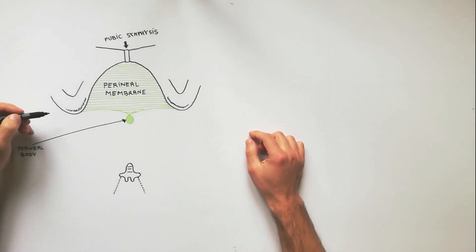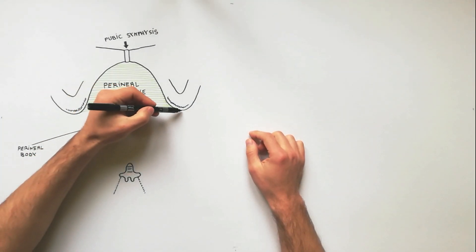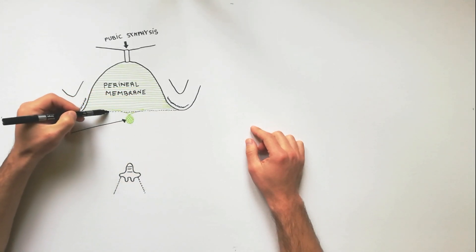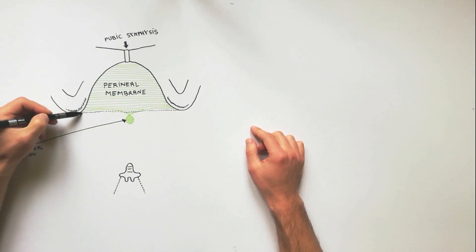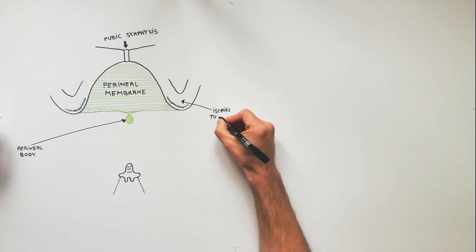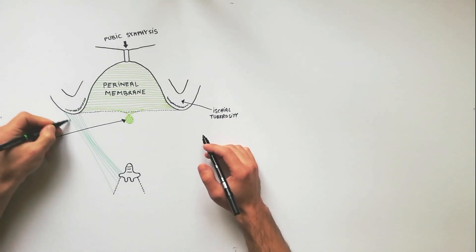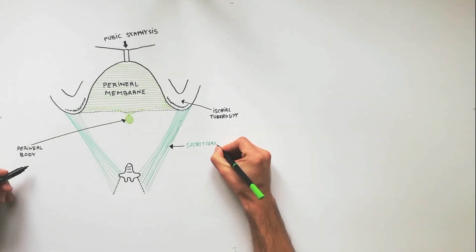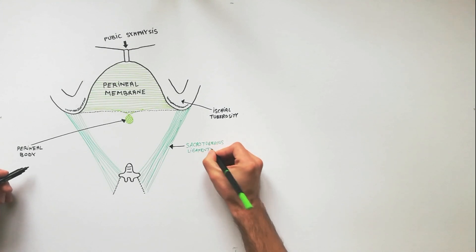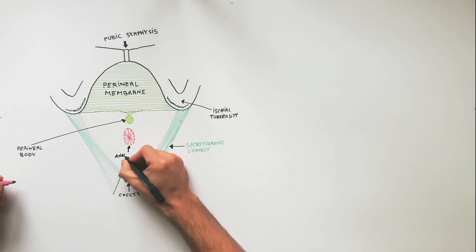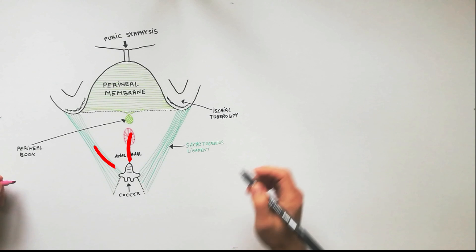The posterior perineum, also called the anal triangle, is a triangular area bounded in front by a horizontal line joining the ischial tuberosities, laterally by the ischial tuberosities, inferolaterally by the sacrotuberous ligaments, and posteriorly by the coccyx. It contains the anal canal in the middle and ischiorectal fossae, one on each side of the anal canal.